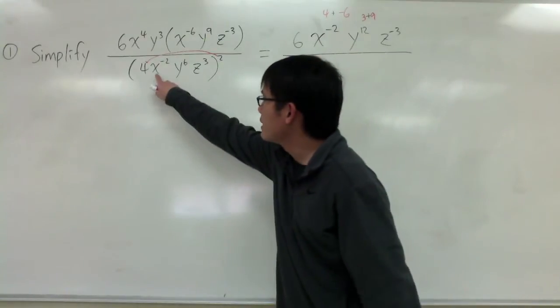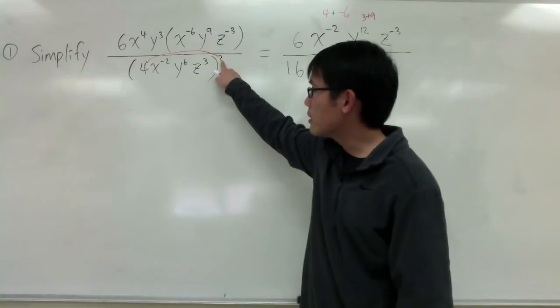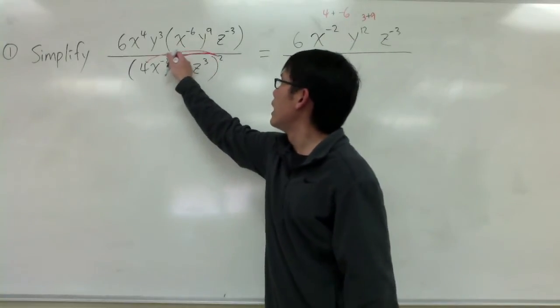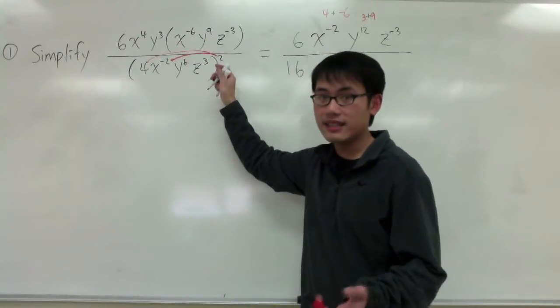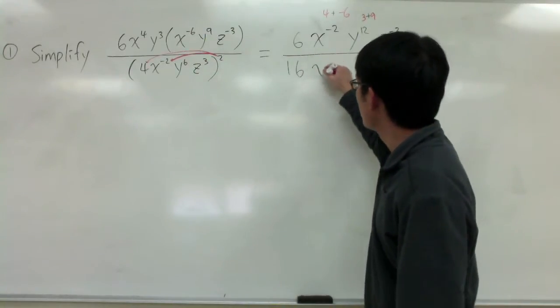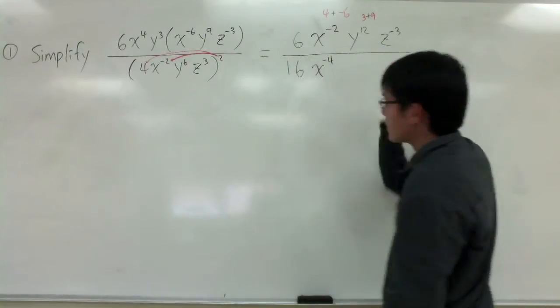Then, I'm looking at x to the negative 2 to the second power. In that case, I will just have to multiply negative 2 with the 2. And I will get negative 4. I will get x. This times that. I will get negative 4.